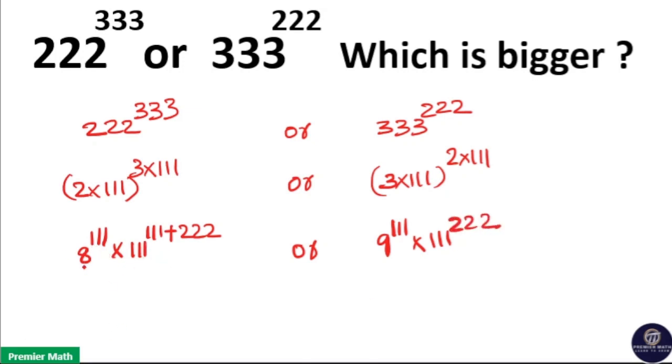Now you can see here 8 raised to 111 into 111 raised to 111. So here 8 and 111 have common power 111. So multiply the base of common power. That is 8 into 111 because both have common power. So 8 into 111 is 888 and power is 111. Then the remaining is 111 raised to 222.